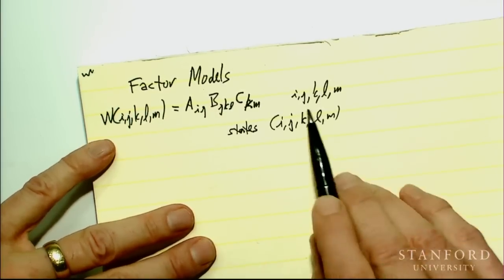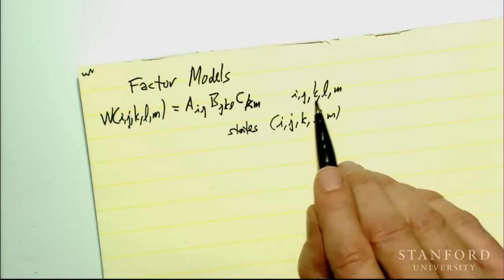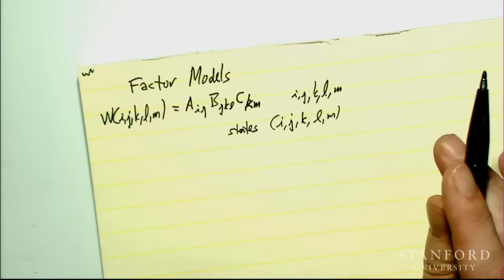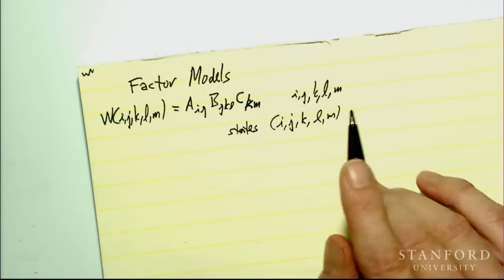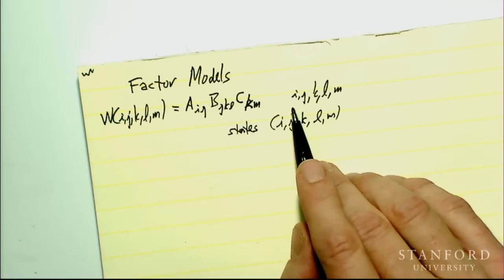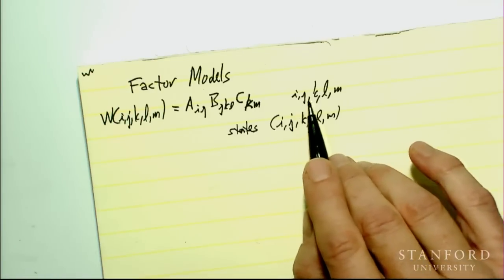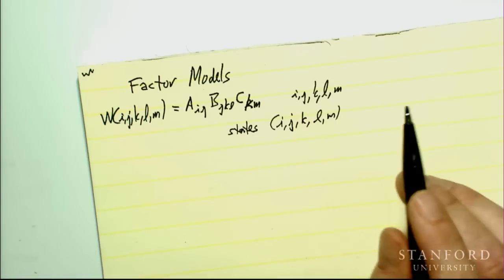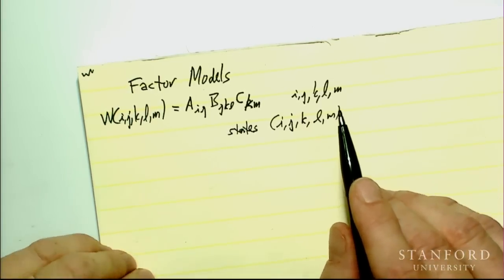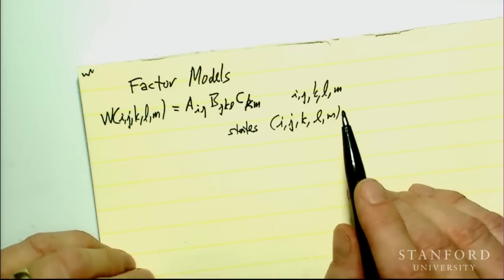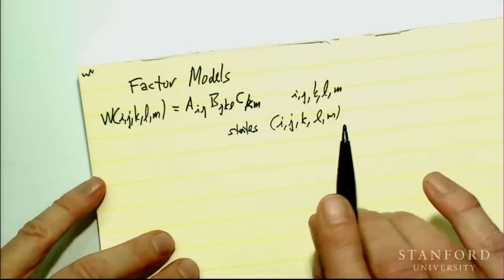If these indices I, J, K, L, M are binary, there are two to the fifth, or 32 different states possible. If they range from digits zero to nine, then there are ten to the fifth — a hundred thousand states.